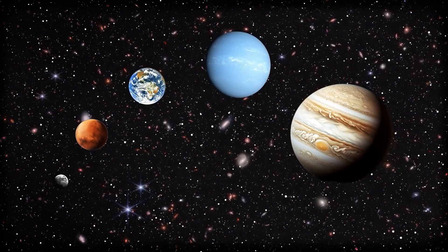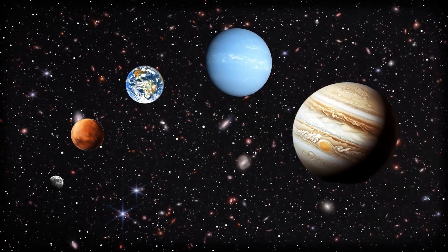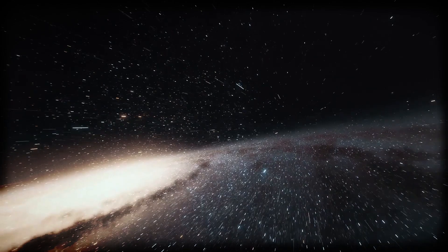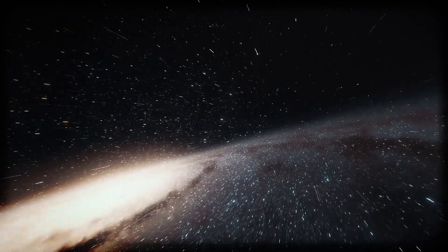So how did Kepler even find these distant planets in the first place? It relied on something called the transit method. Picture this: if a planet passes directly in front of its star, the light from that star dims ever so slightly. It's like watching a tiny bug crawl across a headlight from 100 miles away.